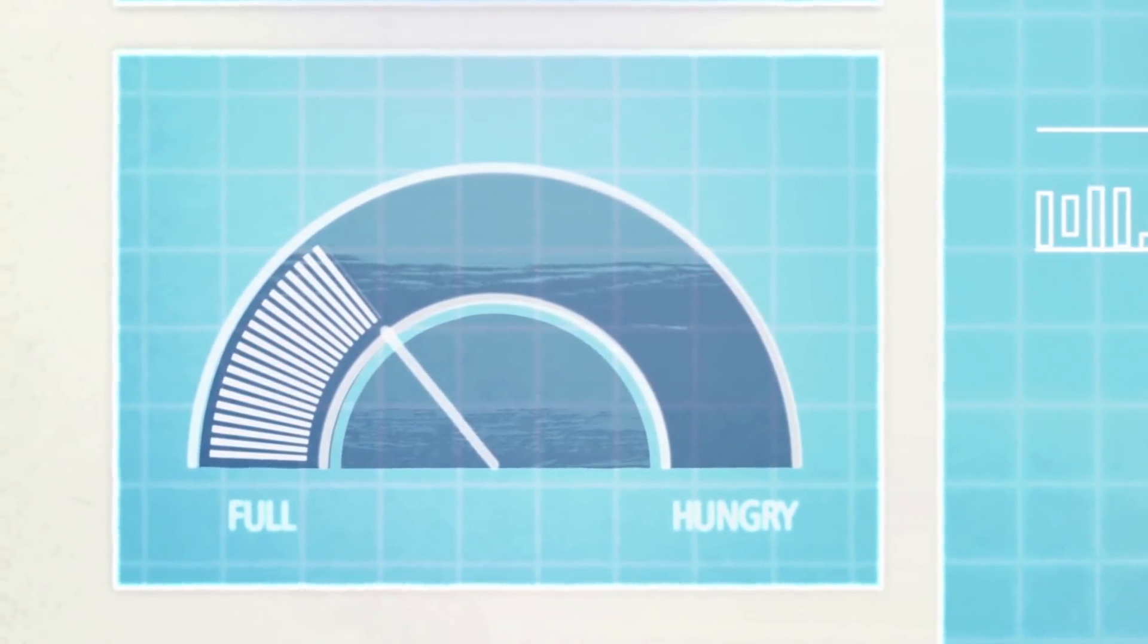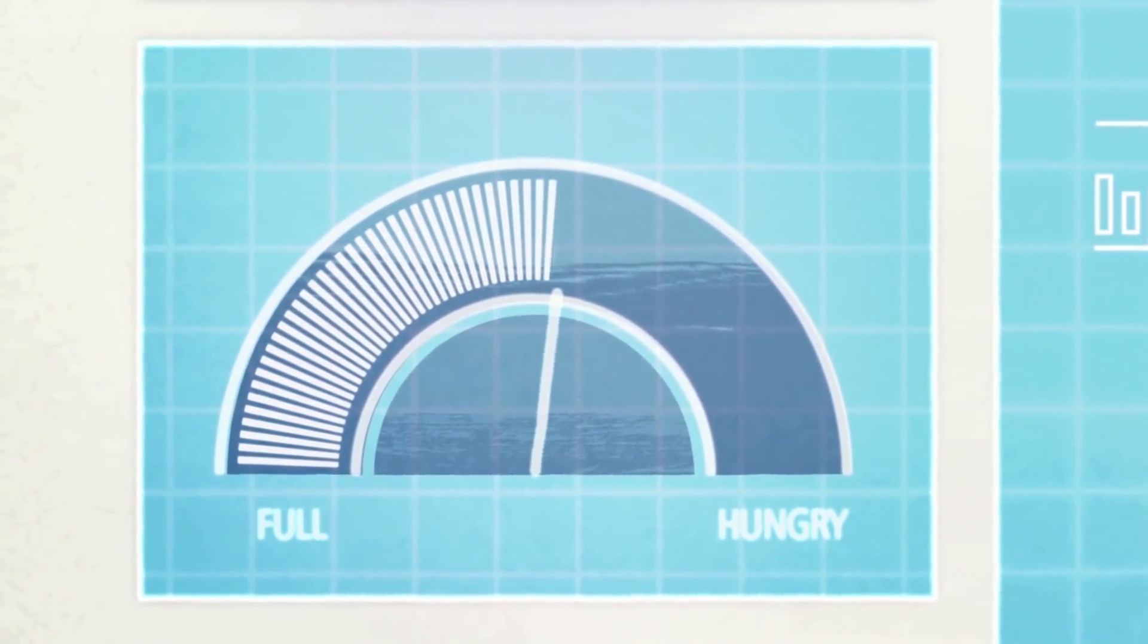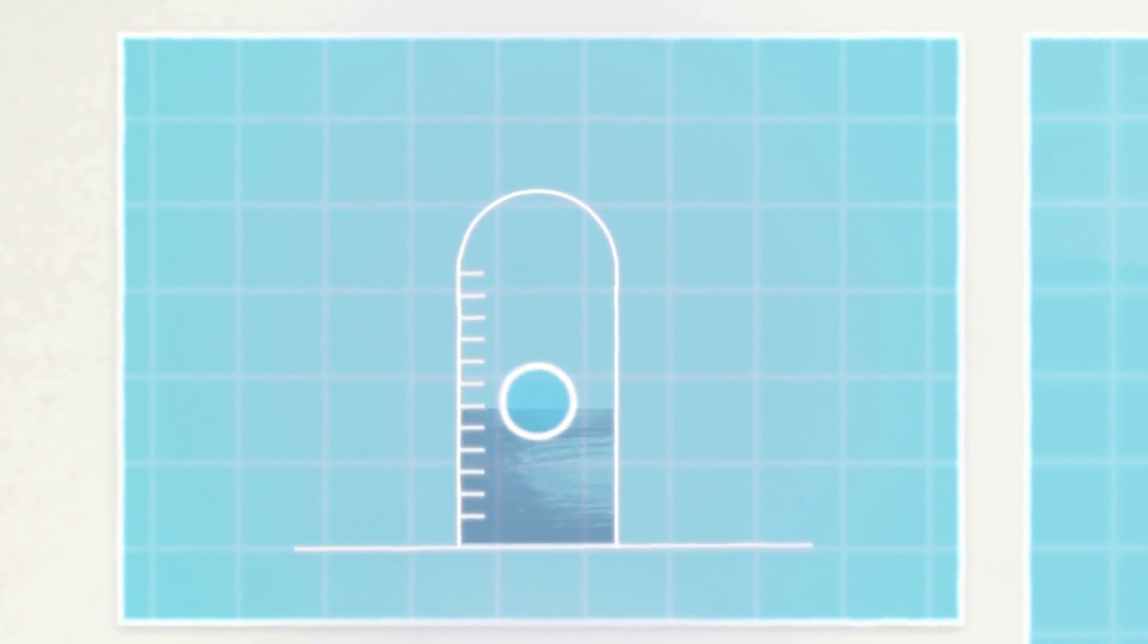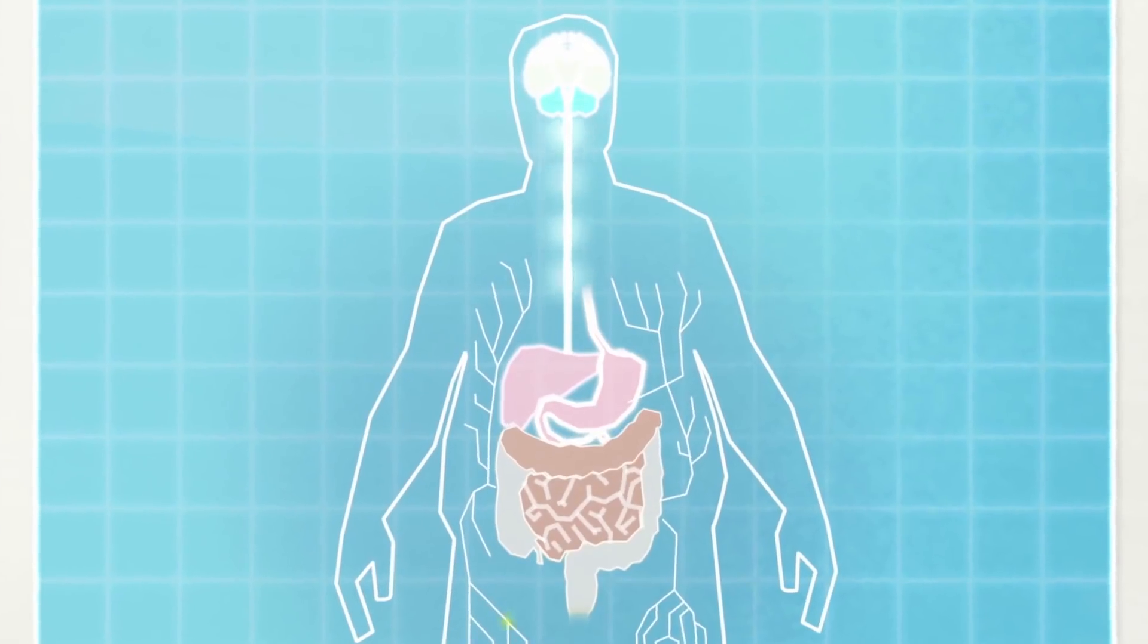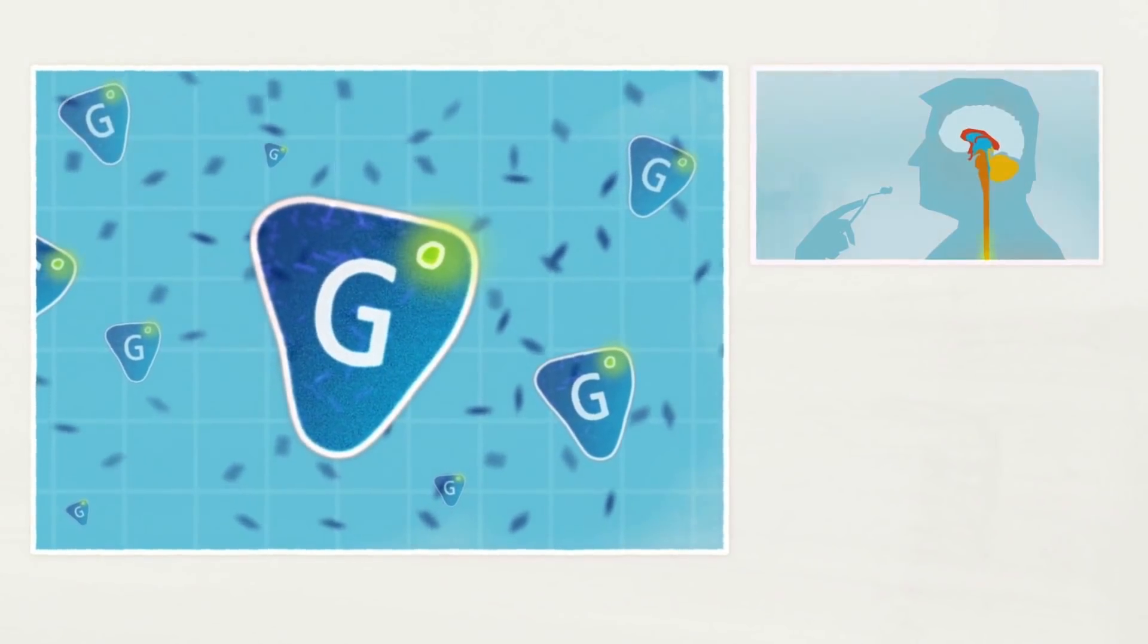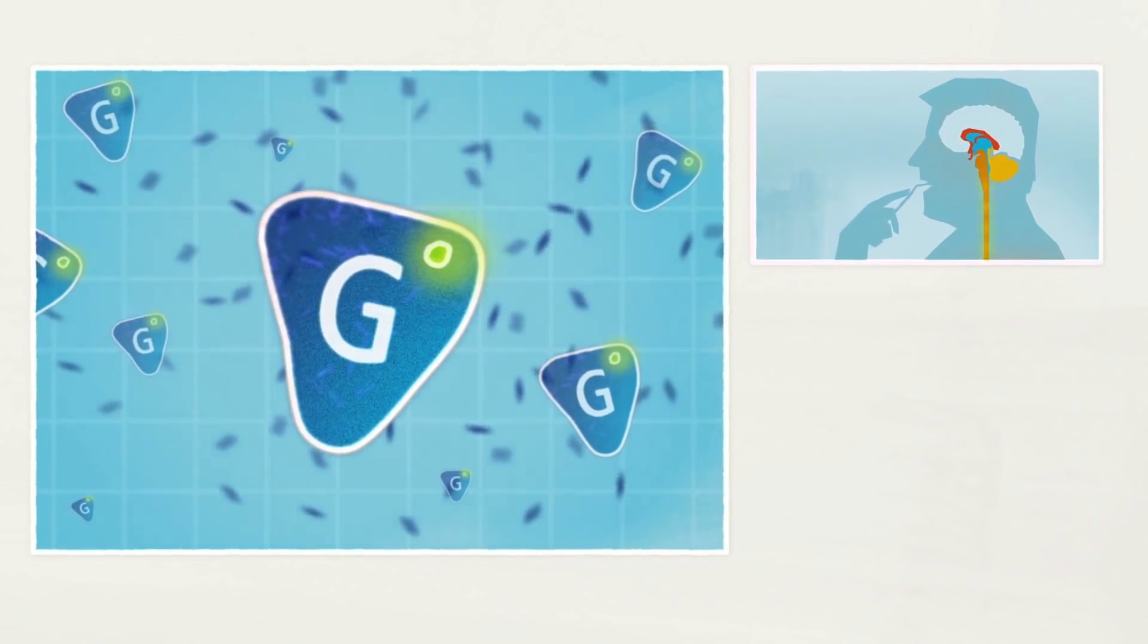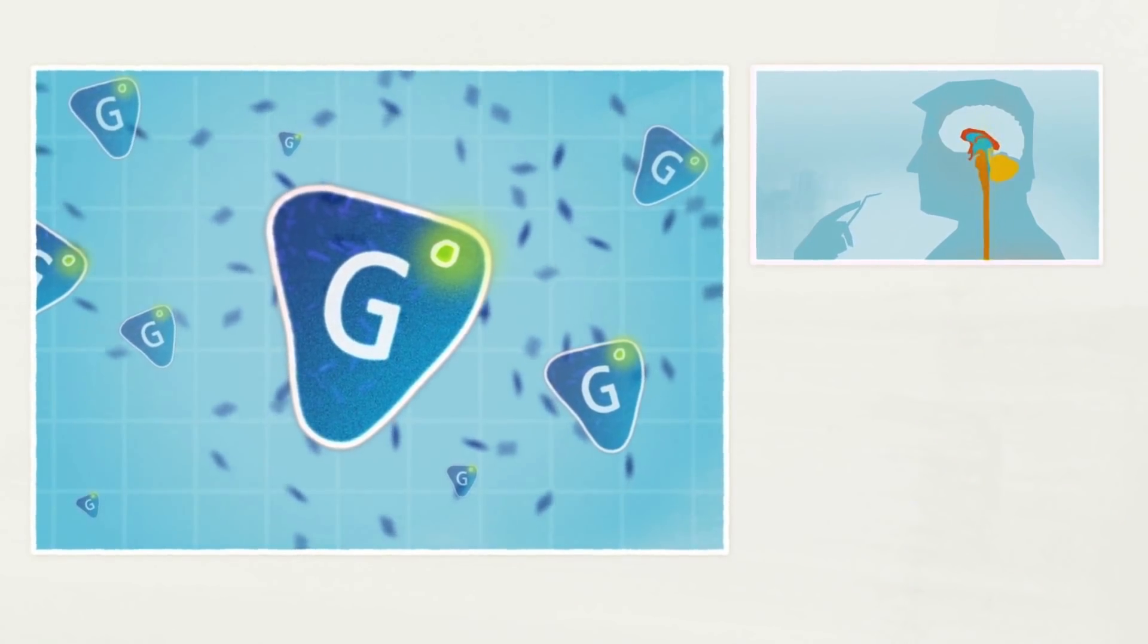Weight loss alters this system, causing the body to increase hunger and lower the metabolic rate. The stomach also releases more of the hormone ghrelin, which serves to heighten feelings of hunger and the desire to eat.